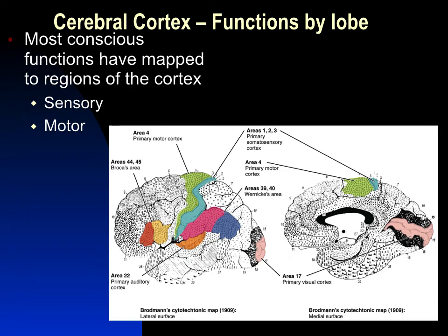The Brodmann areas were localized using brain injury patients. The primary motor cortex is in the last ridge of the frontal lobe, and the primary somatosensory cortex is in the first gyrus of the parietal lobe. Wernicke's area, at the junction of the parietal and temporal lobes, interprets speech. Broca's area allows us to produce the sounds of speech. The cortex has a huge number of neurons; synapses occur in the gray matter, which is where conscious brain processing takes place.